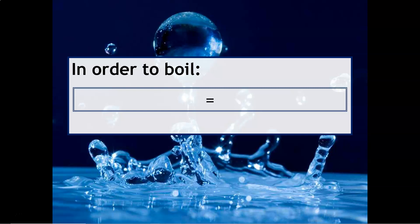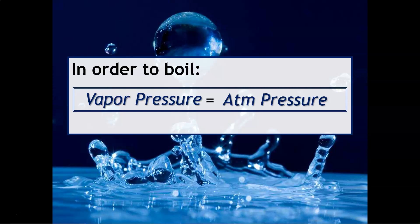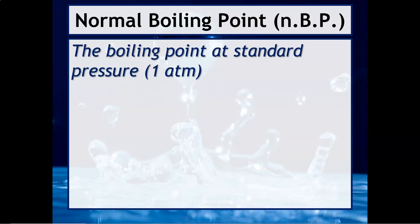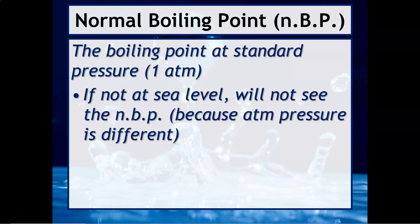In order for a liquid to boil, you need the vapor pressure of the substance to equal the atmospheric pressure — the pressure pushing down on that substance. There's a concept called the normal boiling point, which is the boiling point at standard pressure, specifically at sea level, which is 1 atm. If your substance is not at sea level, you will not observe the normal boiling point, because the atmospheric pressure is different and boiling point is related to both the vapor pressure of the substance and the atmospheric pressure.